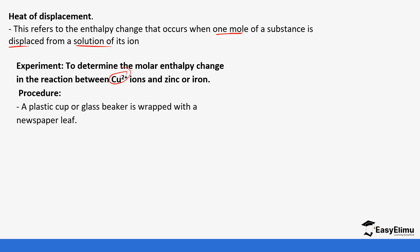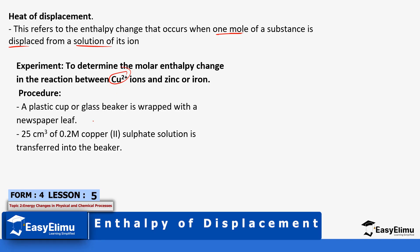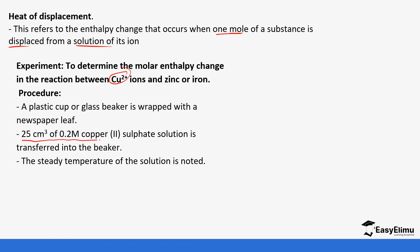So this is the procedure. A plastic cup or a beaker is wrapped with a newspaper leaf and then 25 cm³ of 0.1M copper sulfate solution that contains the copper ion is transferred into the beaker and the temperature is recorded.